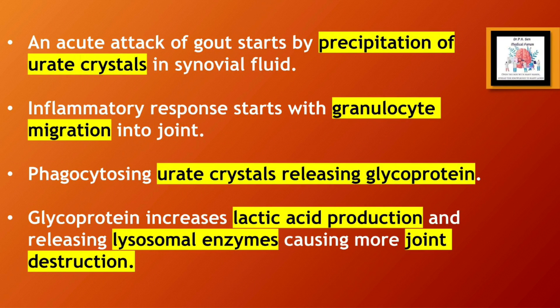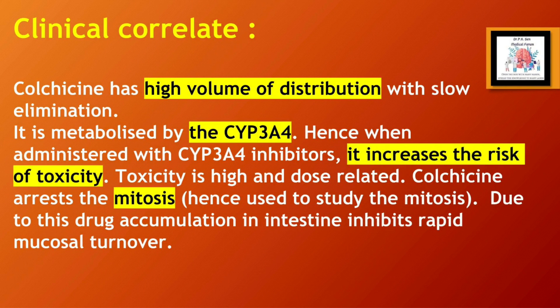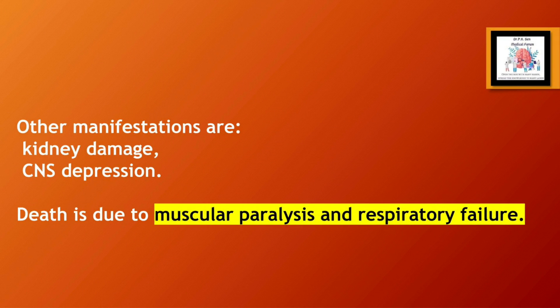An acute attack of gout starts with precipitation of urate crystals in synovial fluid. The inflammatory response begins with granulocyte migration into the joint, phagocytosing urate crystals and releasing glycoprotein, which increases lactic acid production and releases lysosomal enzymes causing further joint destruction. Colchicine has a high volume of distribution with slow elimination; it is metabolized by CYP3A4, so co-administration with CYP3A4 inhibitors increases toxicity risk. Toxicity is high and dose-related; colchicine arrests mitosis, inhibiting rapid mucosal turnover in the intestine. Other manifestations include kidney damage, CNS depression; death is due to muscular paralysis and respiratory failure.